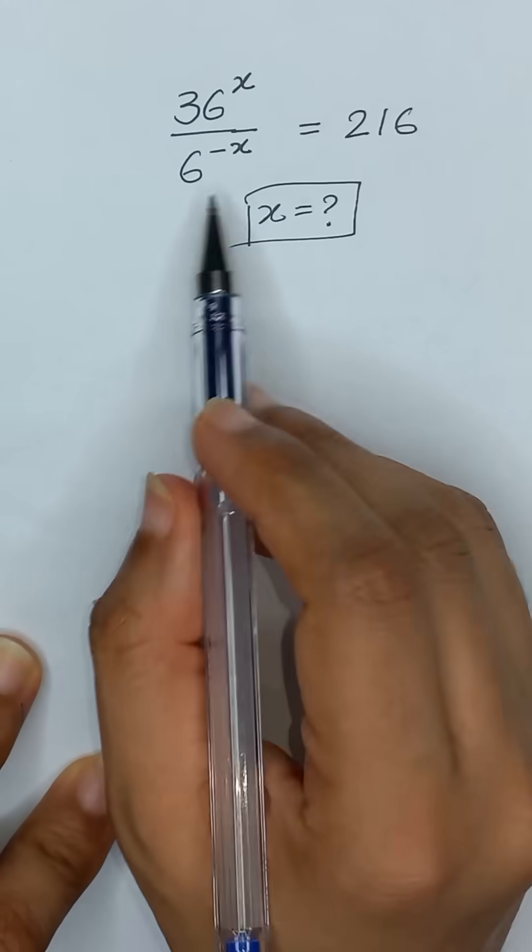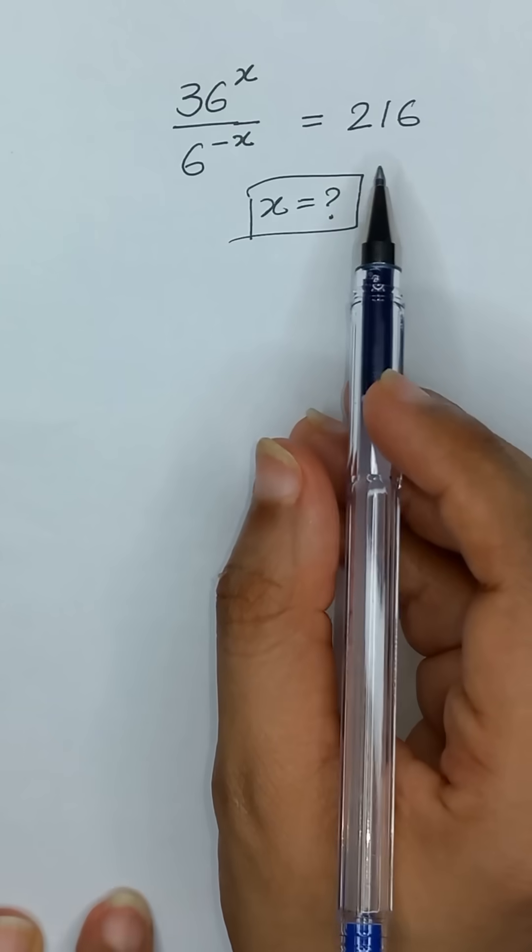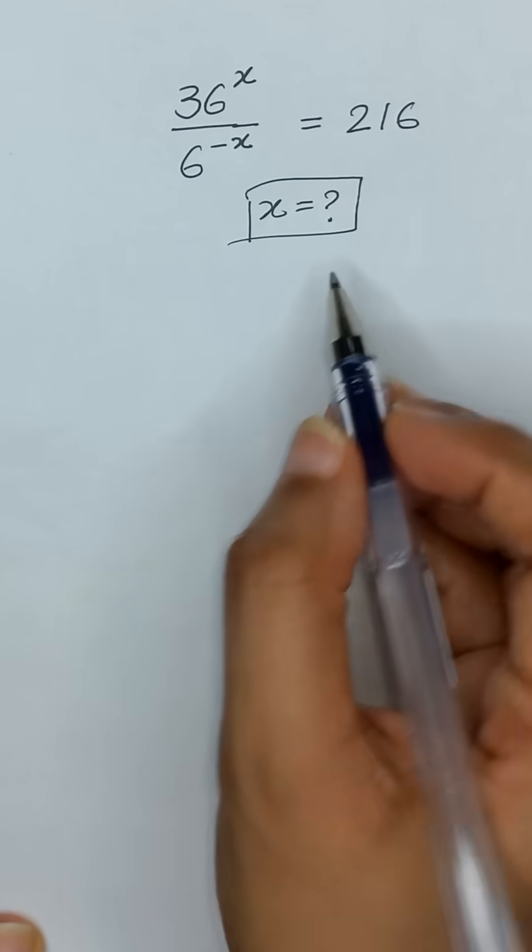36 to the power x divided by 6 to the power minus x is equal to 216 and we will solve for x.